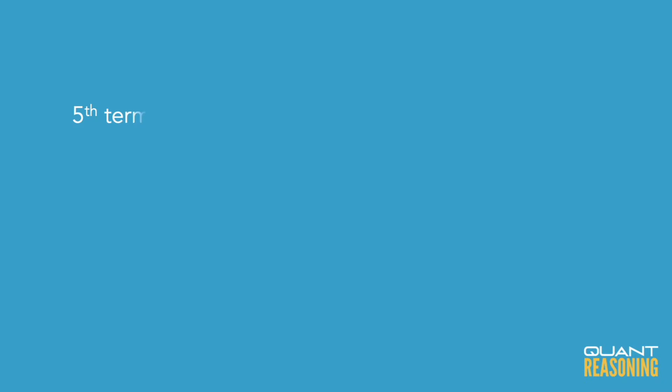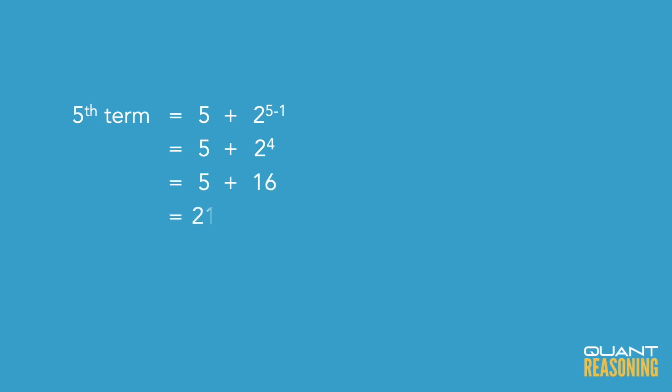They want to know the difference between the fifth term and the sixth term. The long way to solve that would be to figure out that the fifth term is 5 plus 2 to the power of 4, so that's 5 plus 16, which is 21.